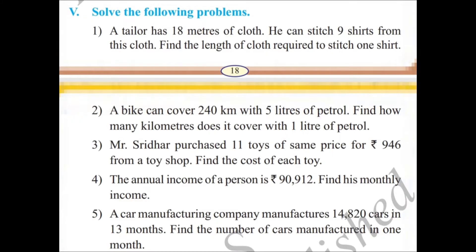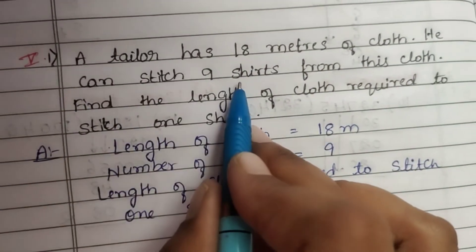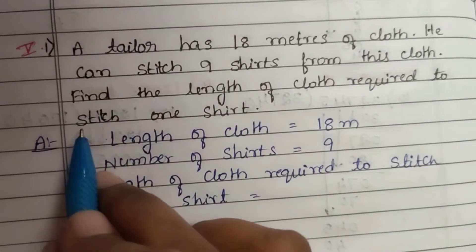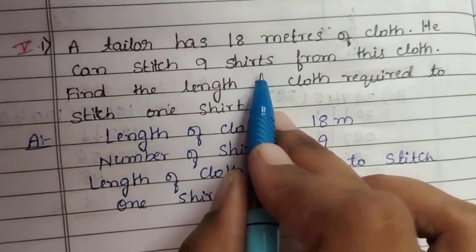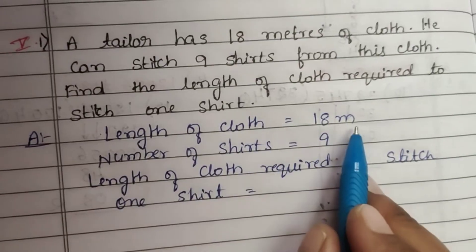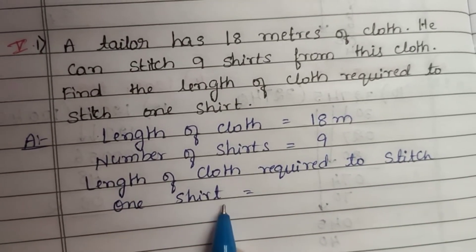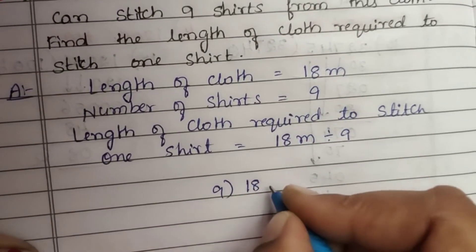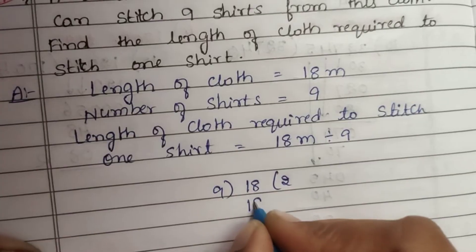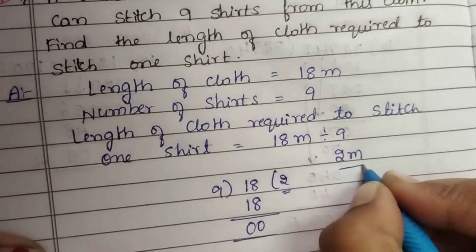Let's see some working problems. Main 5 — solve the following problems. First question: a tailor has 18 meters of cloth and can stitch 9 shirts. Find the length of cloth required to stitch 1 shirt. Length of cloth required = 18 meters ÷ 9. 9 twos are 18, 18 minus 18 is 0. The answer is 2 meters of cloth is required to stitch 1 shirt.